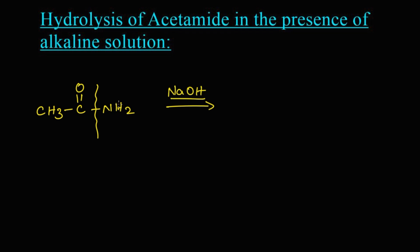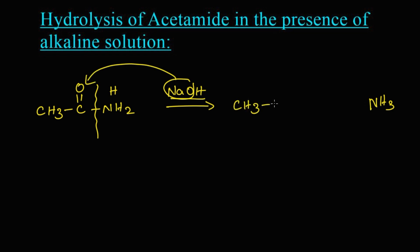The hydrogen from sodium hydroxide gets attached to the NH2 part and it leaves as ammonia, that is NH3. The remaining NaO part gets attached to the aceto part and we get sodium acetate as the product: CH3C(=O)ONa.